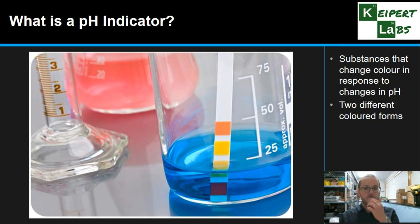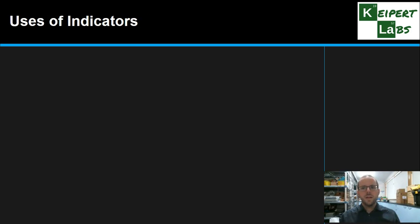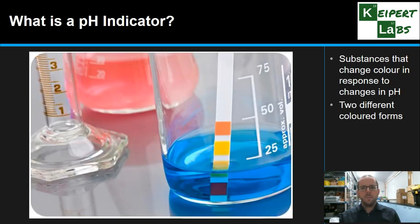Indicators tend to have two different coloured forms or versions — maybe one is colourless and one has a colour, or one's yellow and one's blue, one's red and one's green, one's red and yellow, whatever that might be. It varies from substance to substance, but the fact that it's got two different colours means that when the pH is different, we can see it visually.